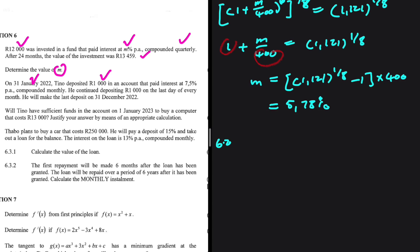The first deposit is on the 31st of January and the last deposit will be on the 31st of December — that is 12 deposits, so n = 12. Our monthly installments or monthly savings equal 1,000. The interest is 7.5% compounded monthly.